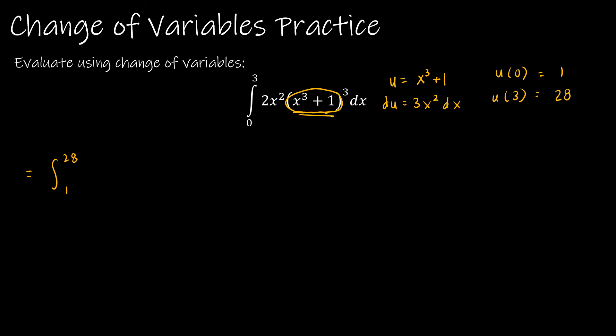So I'm going to rewrite this as the integral from 1 to 28. This obviously is u cubed, but in order to fit the pattern, I need 3x squared dx, and I have 2x squared dx. So I need to multiply by 3 and divide by 2, which means on the outside, I'm doing the opposite so that it works out to me essentially not having done anything. So this is 2 thirds integral from 1 to 28 of u cubed du. So I have 2 thirds, u cubed turns into u to the 4th over 4, integrated from 1 to 28.